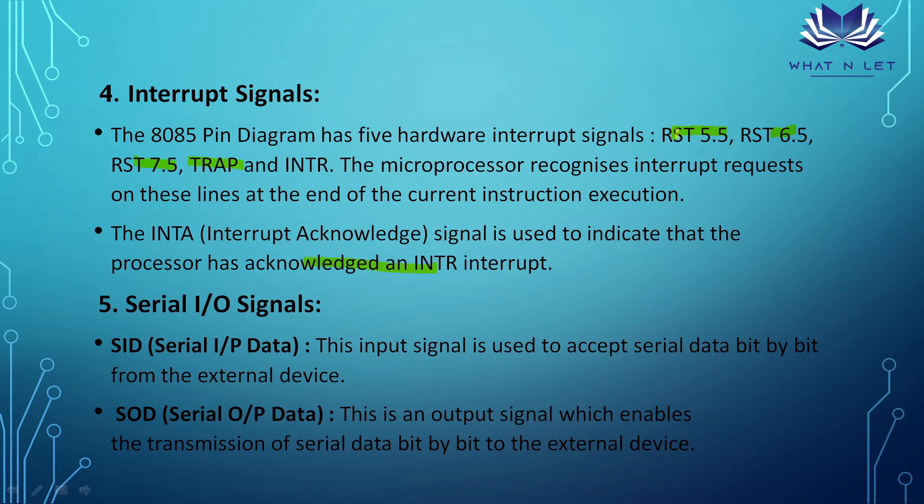In summary: TRAP is a non-maskable interrupt with the highest priority, and the rest of the interrupts — RST 5.5, 6.5, 7.5, and INTR — are maskable.